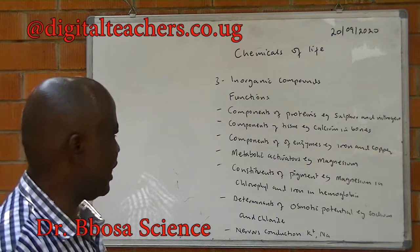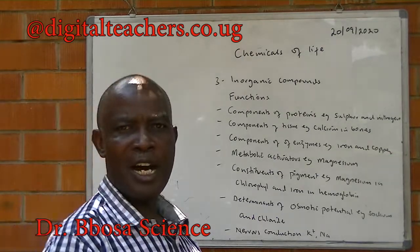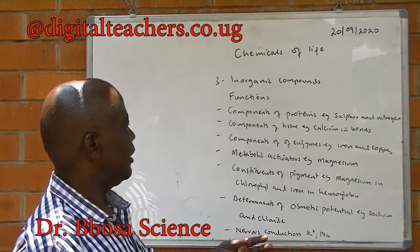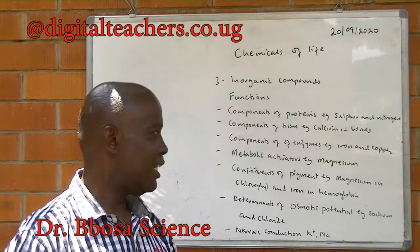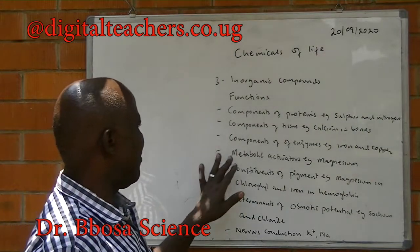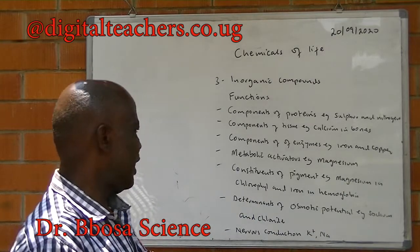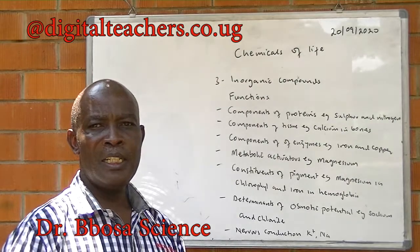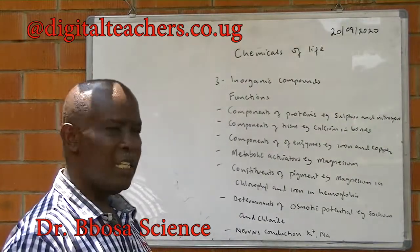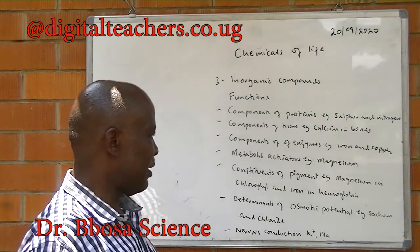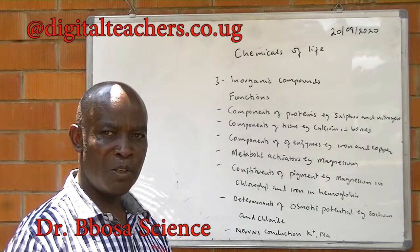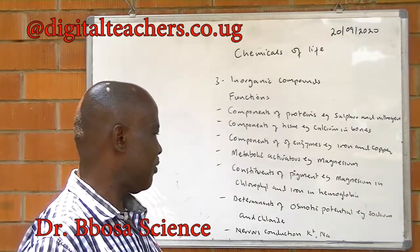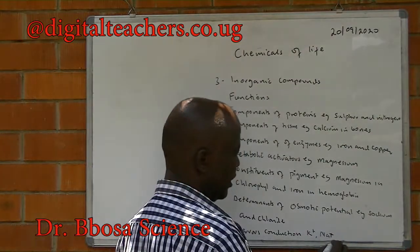Functions of inorganic compounds: they are components of proteins, for example sulfur and nitrogen. They are components of tissues, for example calcium in the bones. They are components of enzymes, such as iron and copper. They are metabolic activators, such as magnesium. They are constituents of pigments, for example magnesium in chlorophyll and iron in hemoglobin. They are determinants of osmotic potential, for example sodium, chlorine, and potassium ions. They help with nervous conduction, for example potassium and sodium.